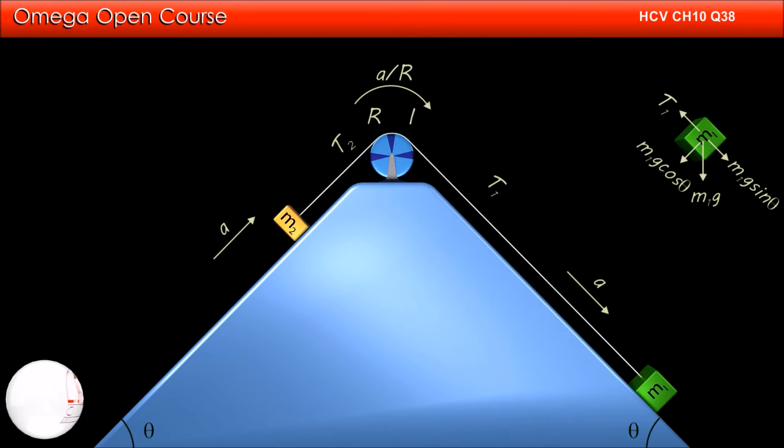Tension T1 is pulling it up the incline. Normal contact force acts perpendicular to the incline and the block is moving down the incline with acceleration A. Writing the equation of motion along the incline, we get M1g sin theta minus T1 is equal to M1a.